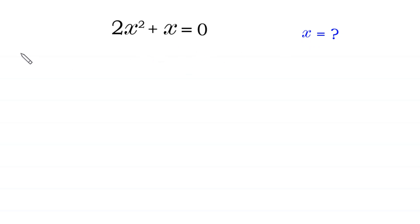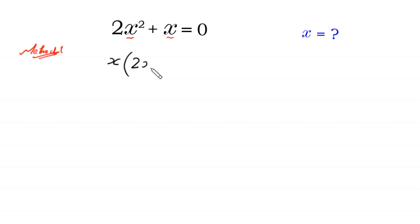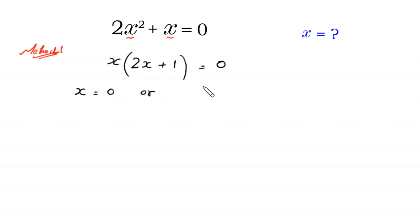Let's start with Method 1. In this method we factor out x from this expression, with x as a common factor, giving us x times the bracket 2x plus 1 is equal to zero. Now from here, either x is equal to zero, or the expression 2x plus 1 is equal to zero.